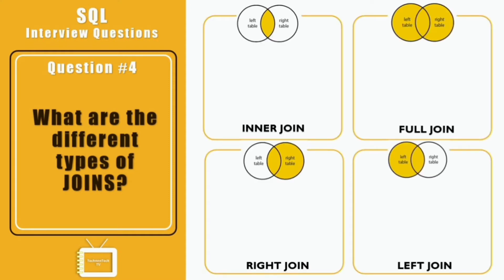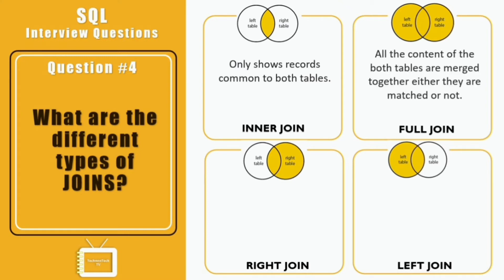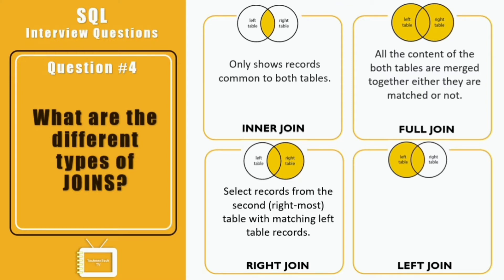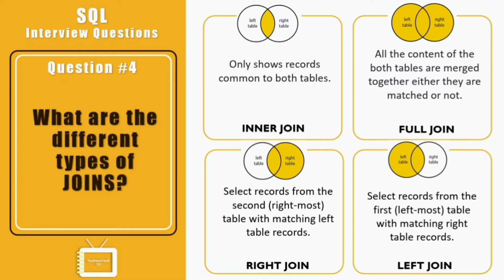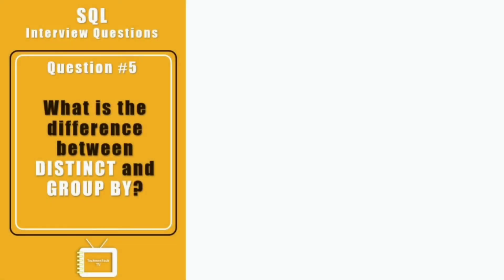Question four: what are the different types of joins? There are four types — INNER JOIN, FULL JOIN, LEFT JOIN, and RIGHT JOIN. INNER JOIN returns records which have matching values in both tables. FULL JOIN returns all records that have a match in either the left or right table. RIGHT JOIN returns records from the right table and those records that satisfy the condition from the left table. LEFT JOIN returns records from the left table and those that satisfy the condition from the right table.